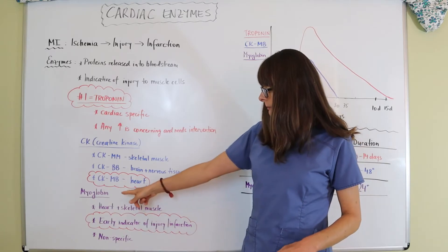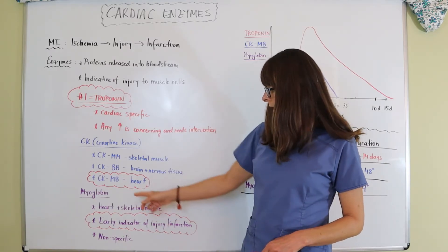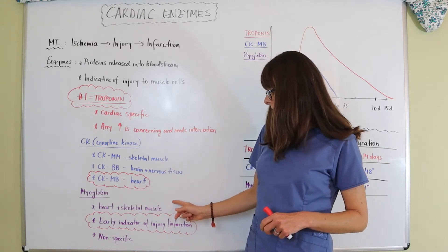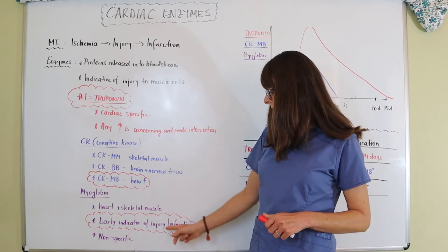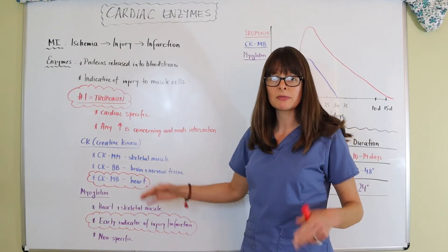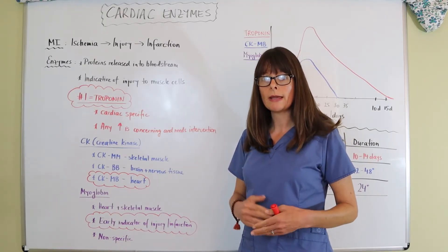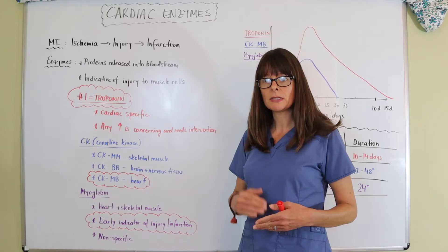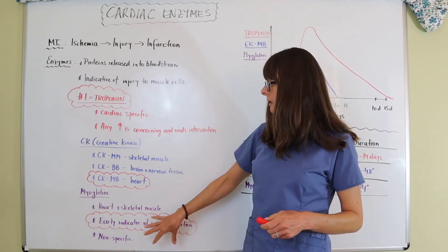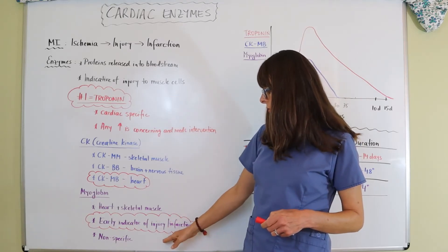And then the third enzyme that we look at is myoglobin. And myoglobin actually gets released when there is something going on with heart or skeletal muscle. But it's an early indicator of injury or infarction. So myoglobin will be one of those enzymes that gets elevated first. So if the patient comes in right away after they start having some symptoms, and only the myoglobin is indicated, it does not mean that there's nothing going on with the heart muscle. But it's an early indicator.